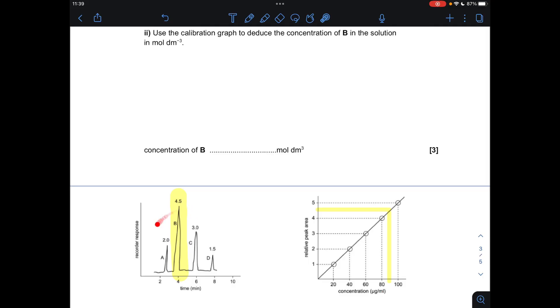If we look at the original gas chromatogram, see I've highlighted ester B, it's got this relative peak area of 4.5. So we go over to the calibration graph, find 4.5 on the relative peak area axis, and then just take along, go down. So the concentration of the ester is 90 micrograms per milliliter.